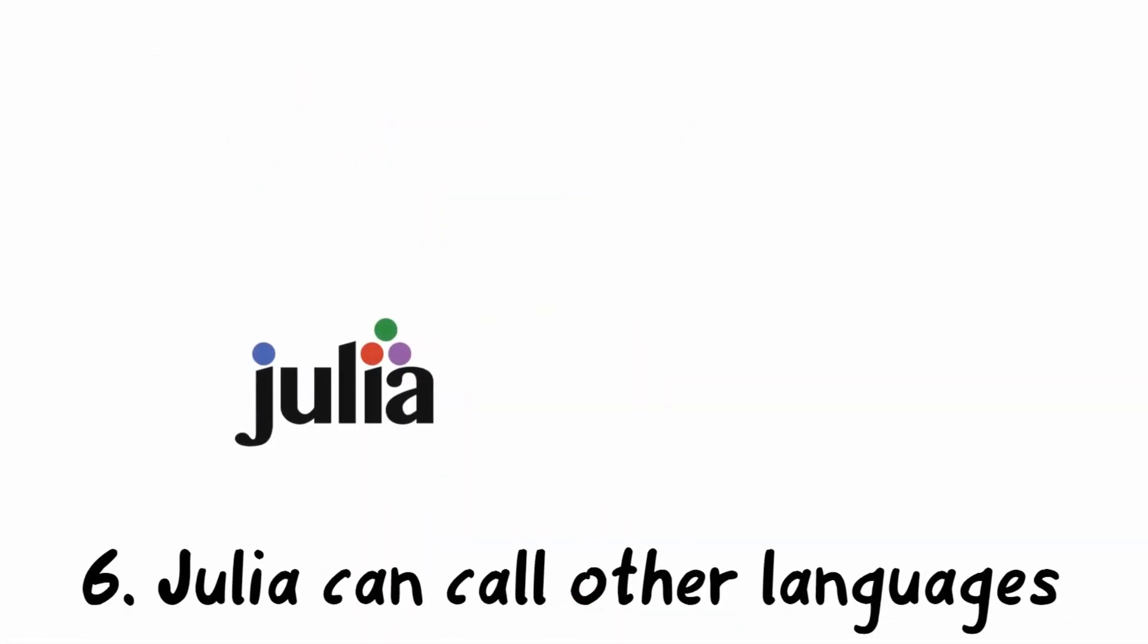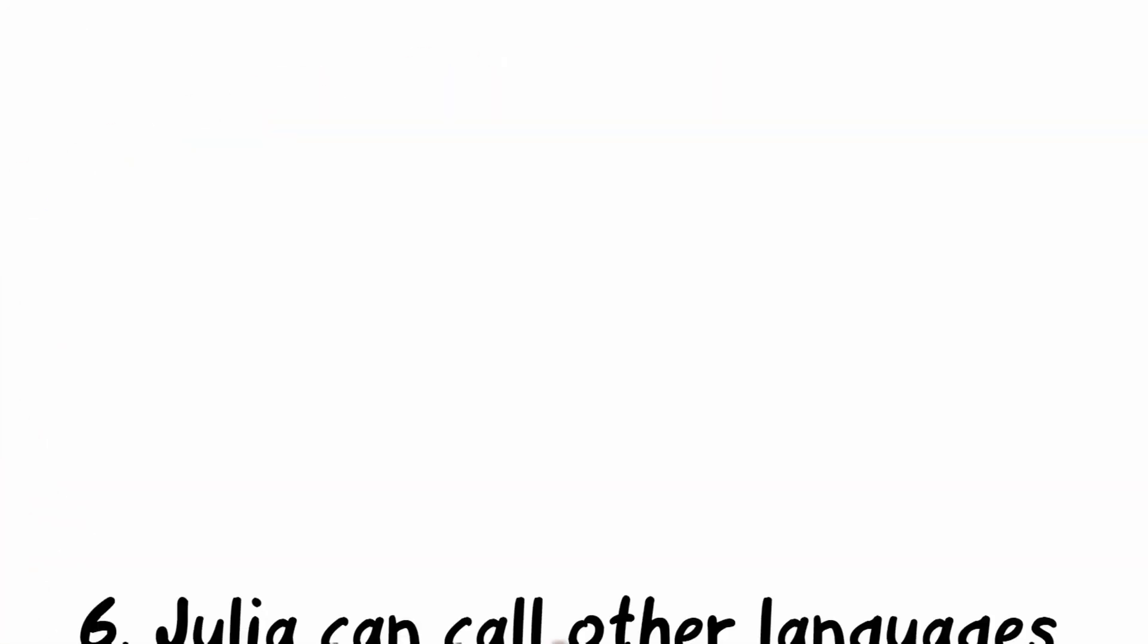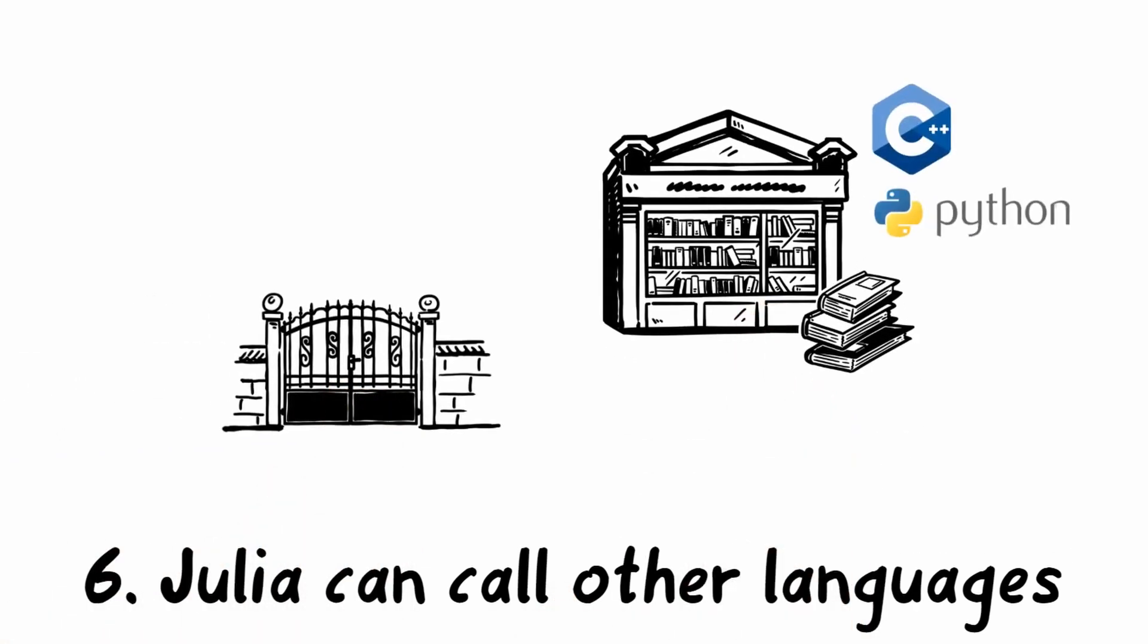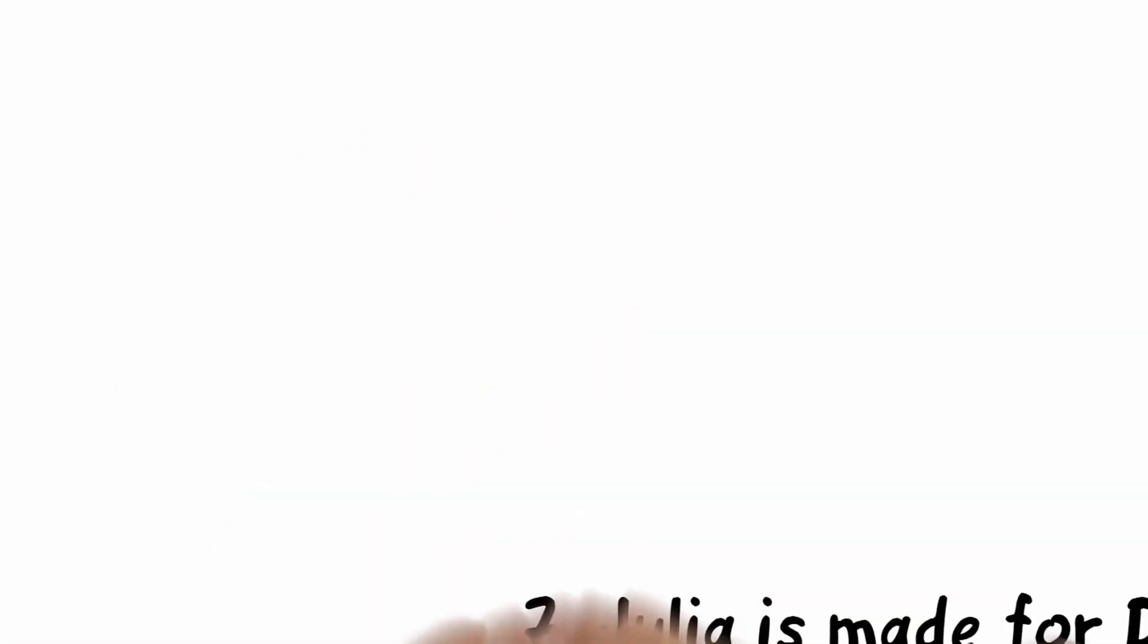6. Julia can call other languages. It is possible to call in a Julia program packages or functions written in other languages. So you can call all functions written in C or Python without any problem. This means you have access to all existing libraries without limitation.